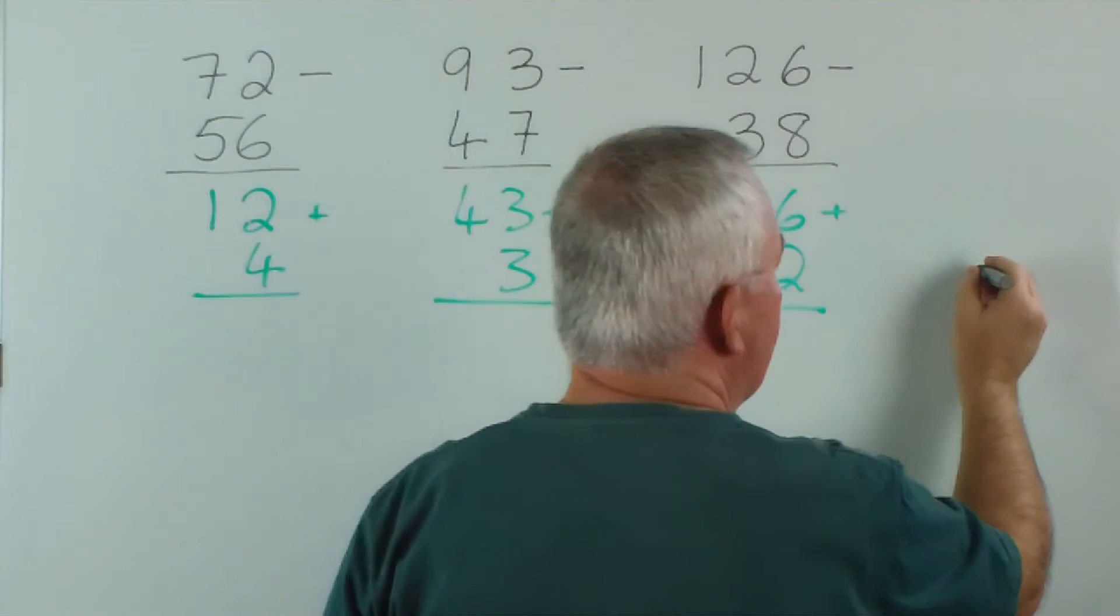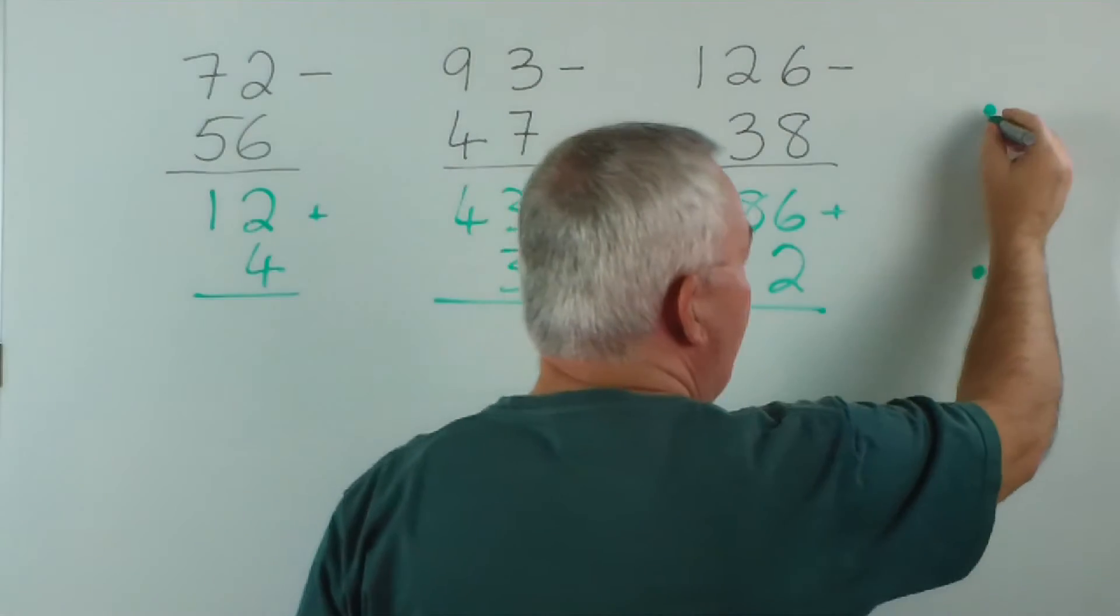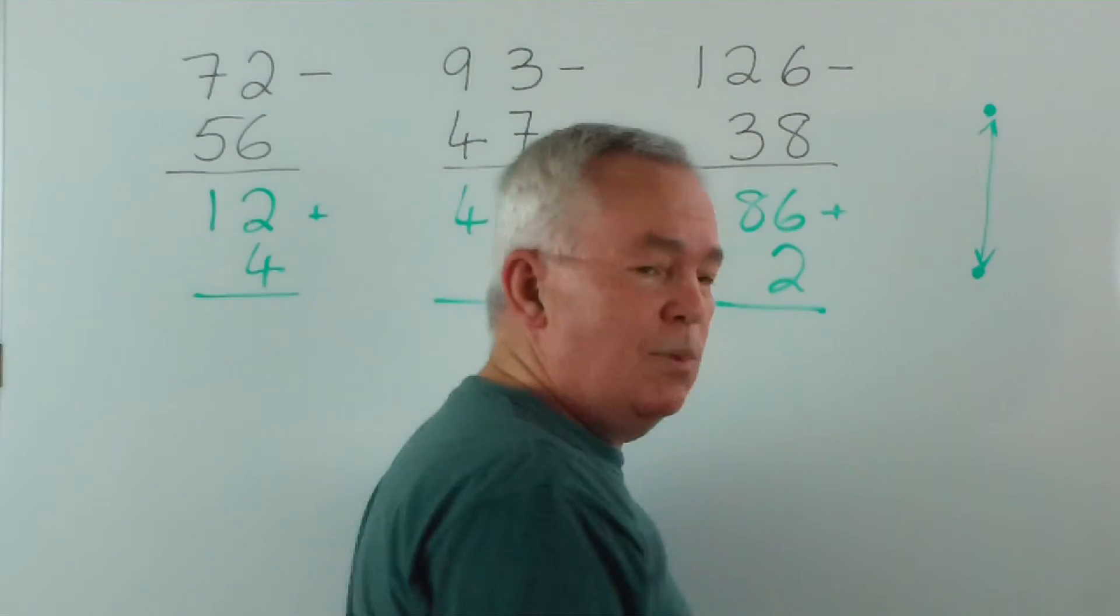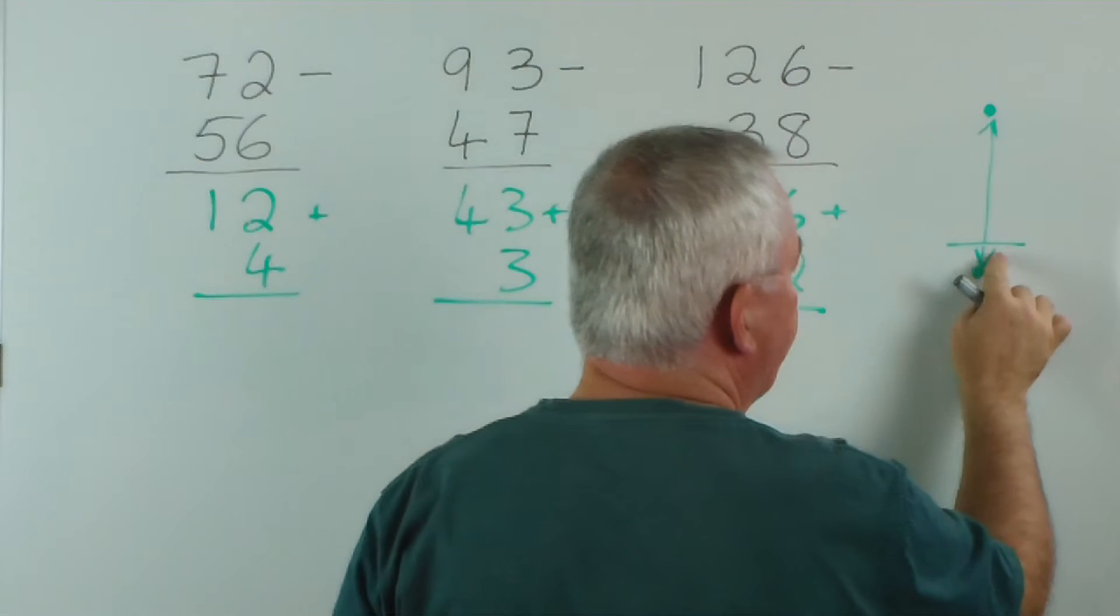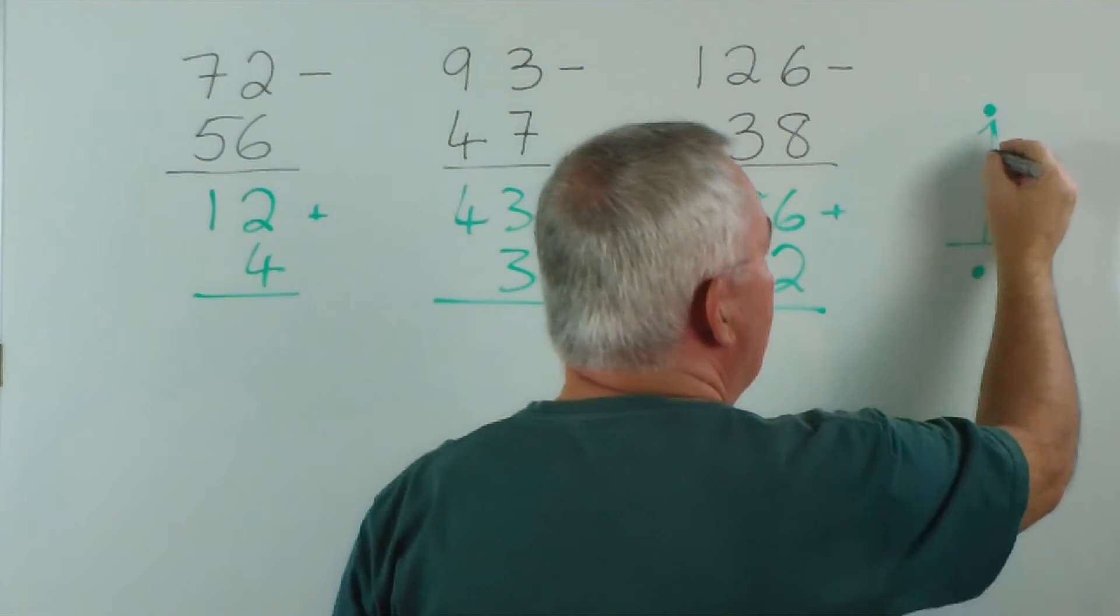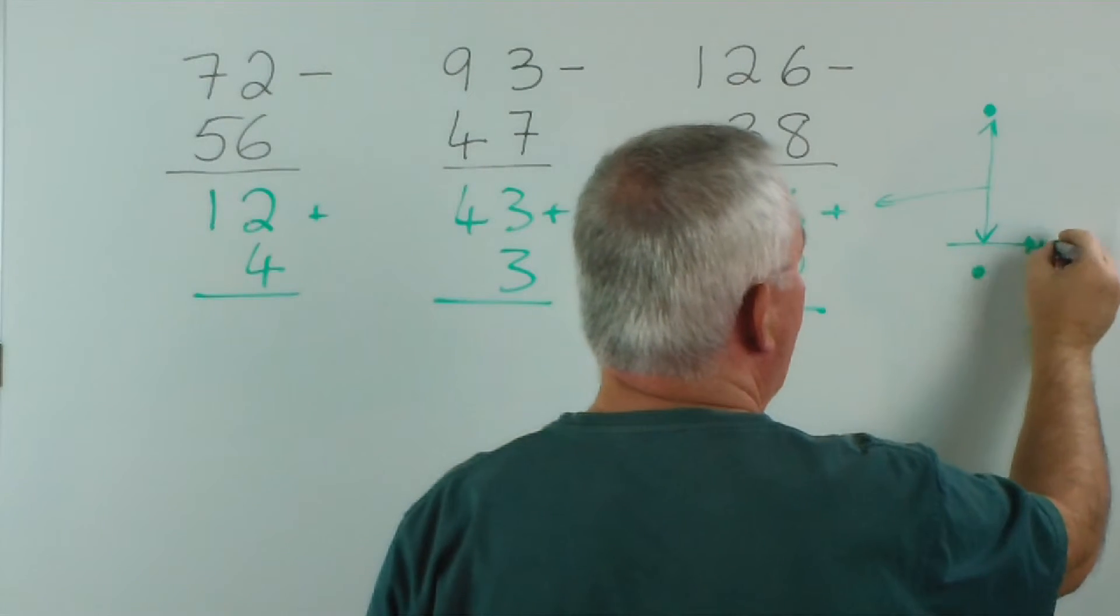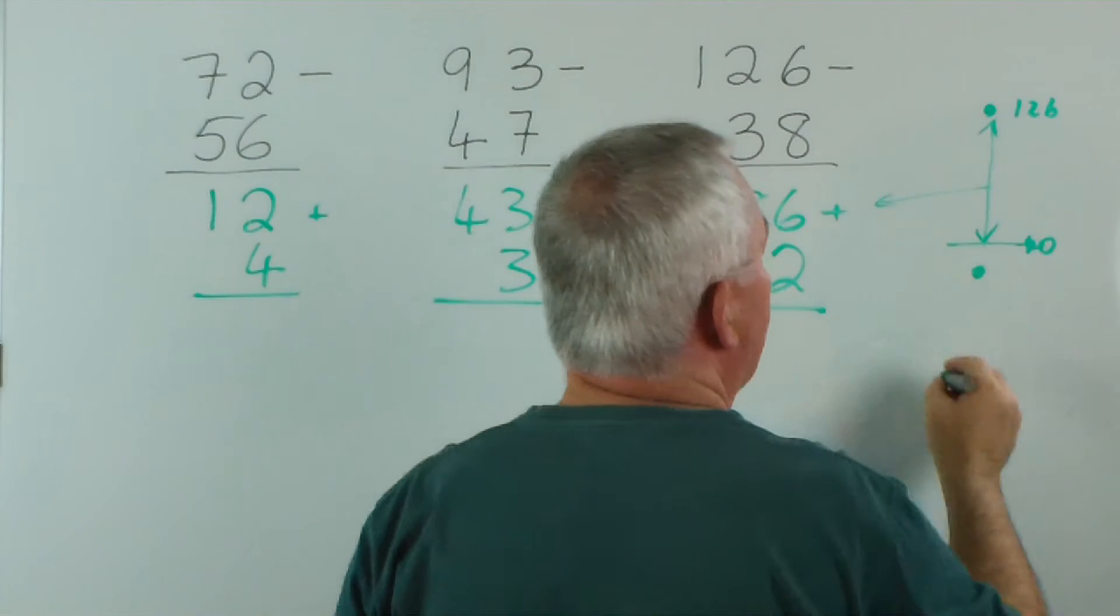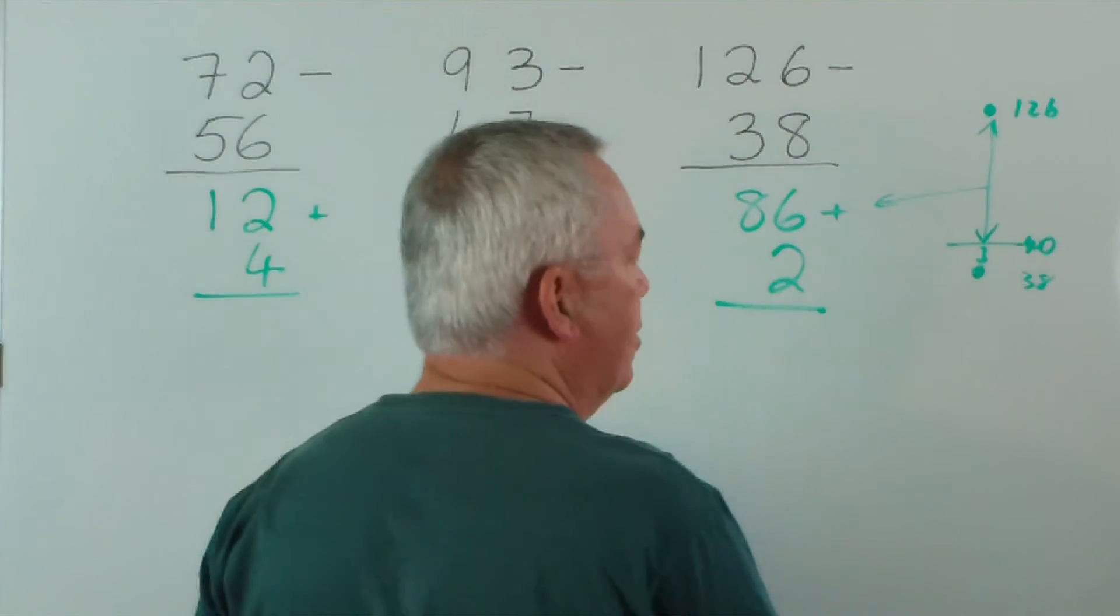The reasoning is that if we're subtracting one small number from a larger one, and wanting to find this gap, the difference between them, if there's a rounding off number, what we do is we find this gap first, which is the top number, because this, for example, might have been 40 and 126. And then we find the other gap, which is 2, and add it on.